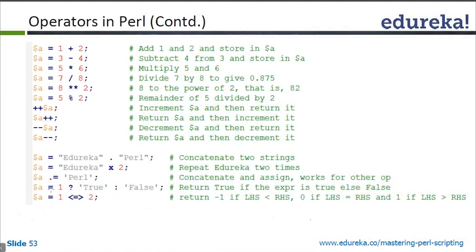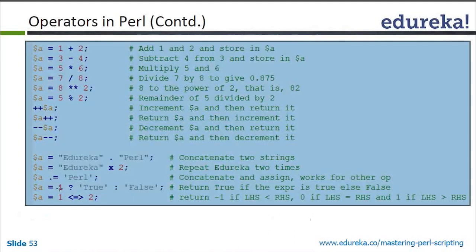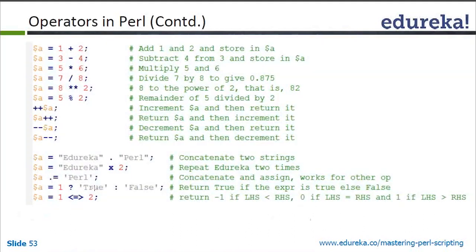We can also use the ternary operator: dollar a equals 1 ? 'true' : 'false'. If you know C or C++, this is the ternary operator. If the first expression is true it gives the first value; if false it gives the second value. If the value of A is 1 it will give true; if not, it gives false. Instead of writing two or three lines of code, you can write it in a single line.